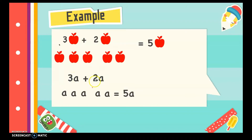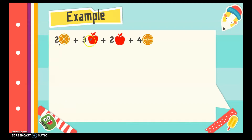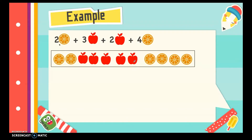I simply add the two numbers — three and two — which gives five, then copy the variable. But let's say we add another fruit, which is orange. So I have two oranges plus three apples plus two apples plus another four oranges. To get the total, we need to get the total number of oranges and the total number of apples, but we cannot combine the two since they are different kinds of fruit.